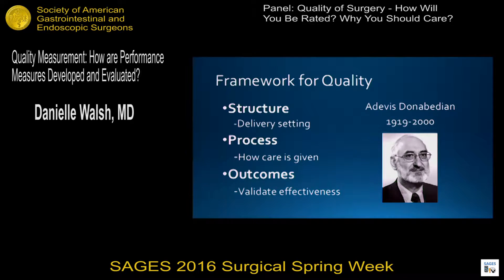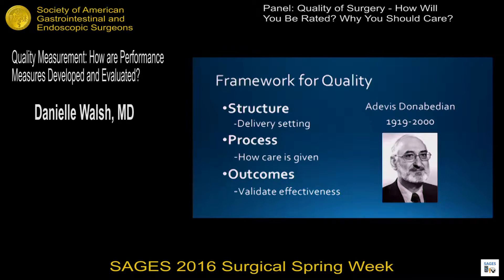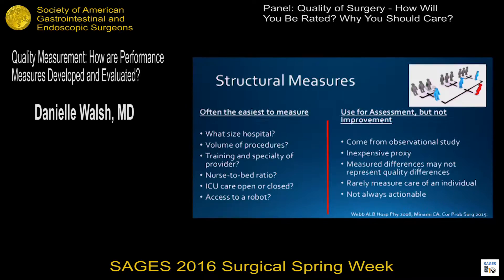When we look at quality, a framework was first established in about 1966. There was a Lebanese surgeon who ended up at the University of Michigan, and he published about quality metrics being divided into three big categories: what is the structure — things that have to do with the delivery setting; what is the process — how is that care being given; and what are the outcomes — a validity metric of how effective we're being. I'm going to talk about these three and then go through some of the different quality metrics that might fall under them.